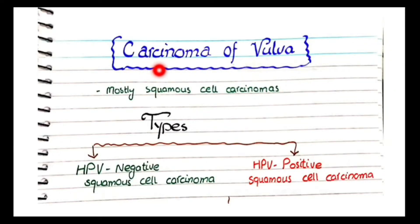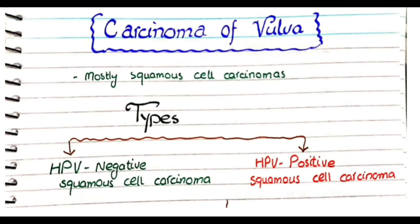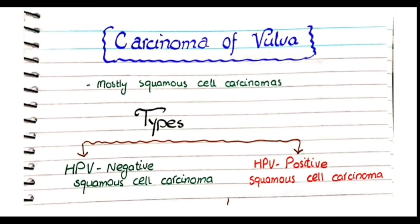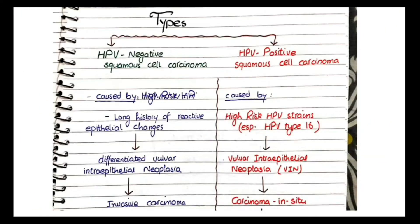In this video we will discuss the carcinomas of the vulva briefly. Most carcinomas of the vulva are squamous cell carcinomas, and based upon the pathogenesis and histology, we categorize them into two types: HPV-positive squamous cell carcinoma, caused by human papilloma virus infection, and HPV-negative squamous cell carcinoma.